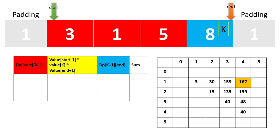This whole concept will become clearer when we code it. Briefly, we iterate over all lengths from 1 up to n (in this case 4). For each length, we find the value for each range [left, right], bursting each balloon in the range as last, finding the answer, and taking the maximum.